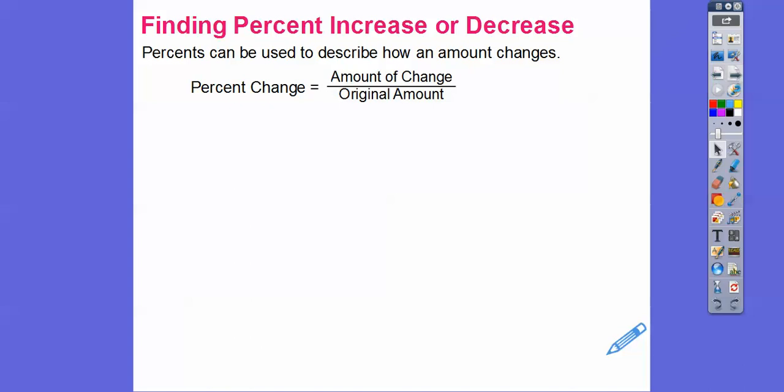Percents can be used to describe how much an amount changes. So the percent change is we find out how much it changed. So there'll be two numbers. You subtract them. Take the bigger one minus the smaller one, always. And then you divide it by the first number, the original number.